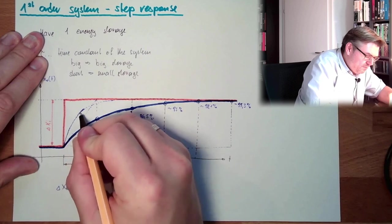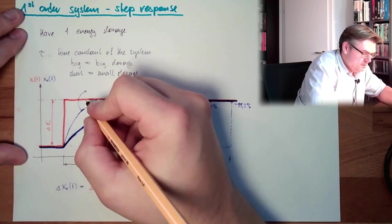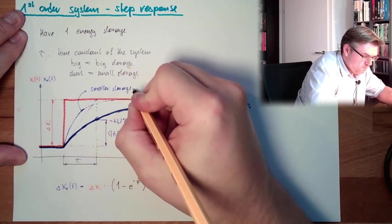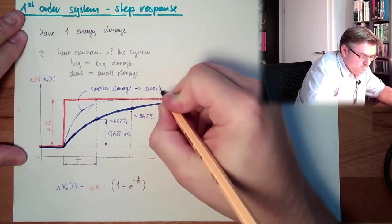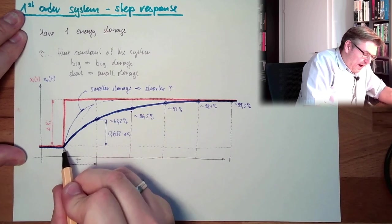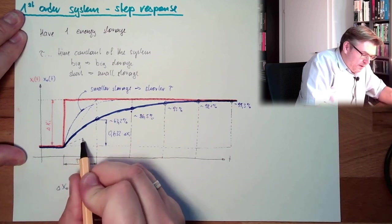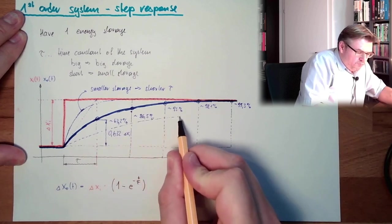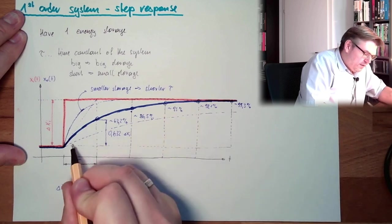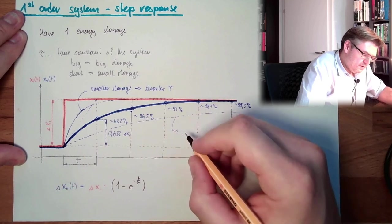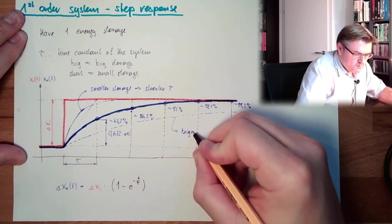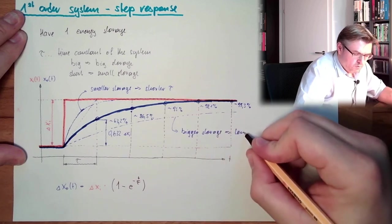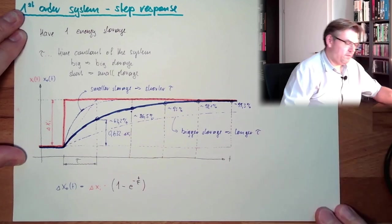But the basic behavior is the same. This is smaller storage, shorter tau, and if we have higher storage, then we would probably look like this somehow. We will start very gentle. This here is bigger storage, longer tau, longer time constant.